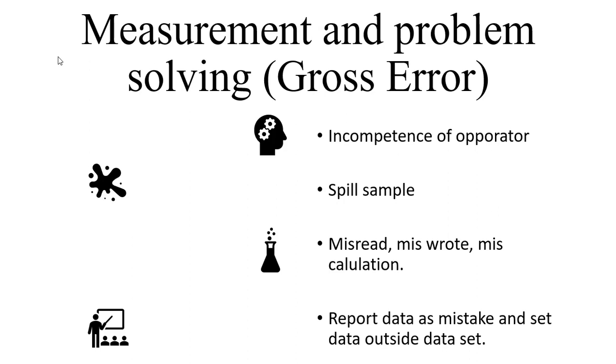Experimenter error is when the operator spills a sample, reads or writes the wrong value, or has a miscalculation. These errors are human mistakes.